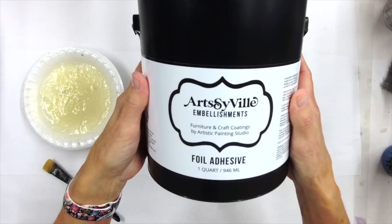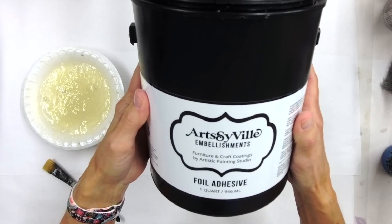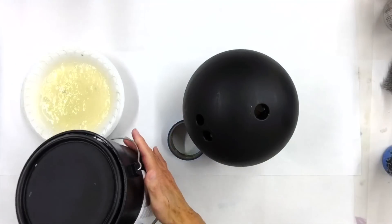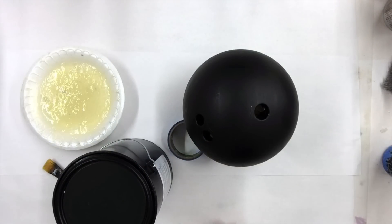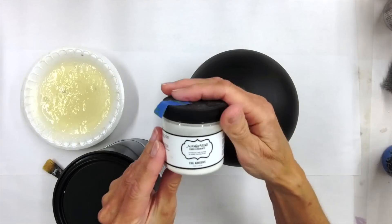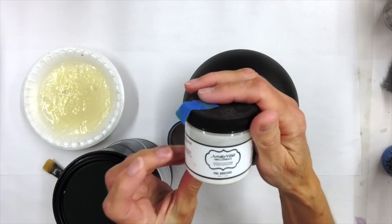With working with the process of metallic foils, it is basically a two-part application. We need the foil adhesive. This is our Artsyville Embellishments foil adhesive. I am working out of a gallon. Please don't let that scare you as we do have a lot smaller containers.